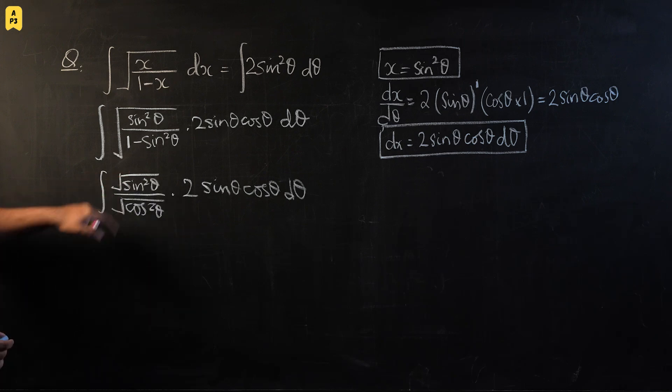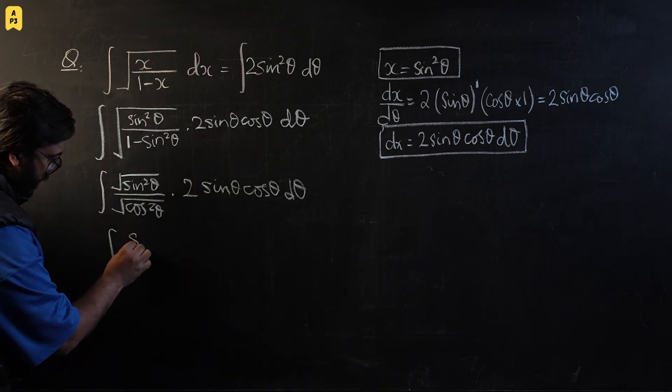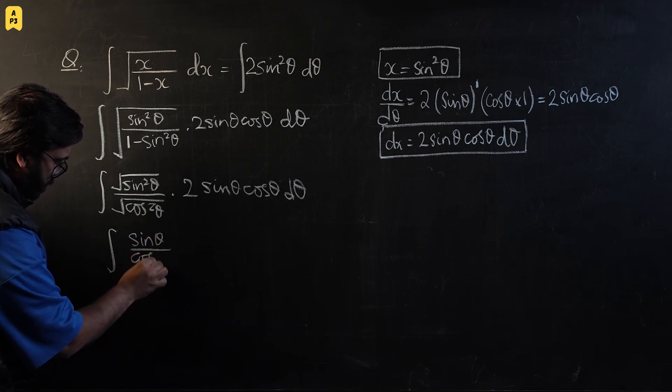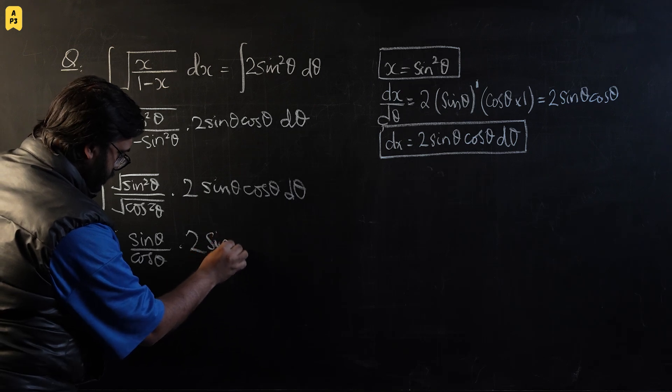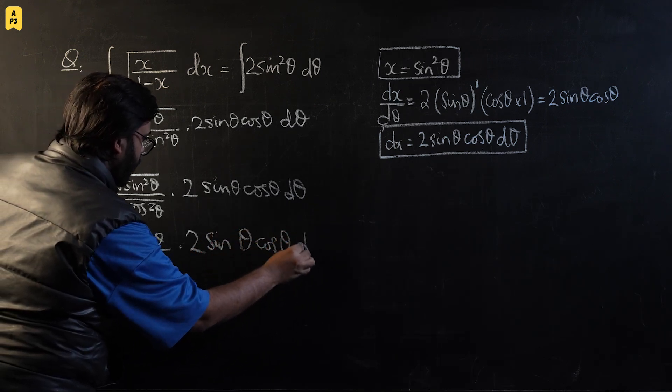Now we can clearly see these square roots are going to cancel out and we are going to be left with sinθ/cosθ times 2sinθcosθ dθ.